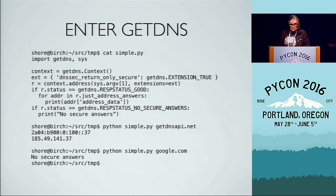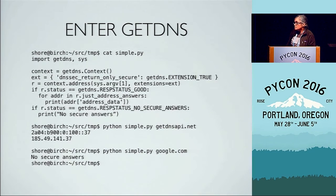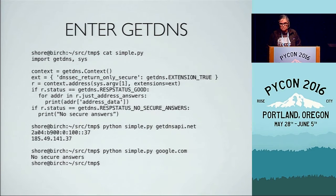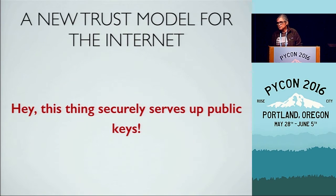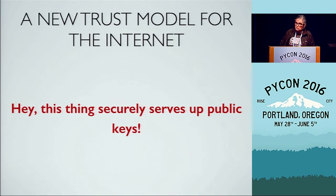I run it against getDNSAPI.net, and we get our addresses. I run it against Google.com — Google doesn't use DNSSEC to protect their DNS records; they've opted not to. So we're looking at this and saying, DNSSEC protects public keys for DNS — can it protect other stuff? It securely serves up public keys. Is this a new trust model for the Internet? And the answer is yes.